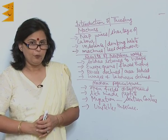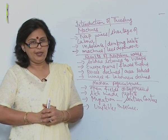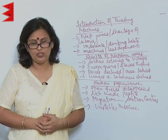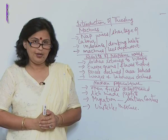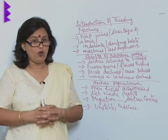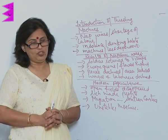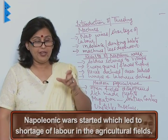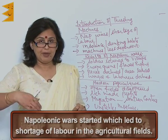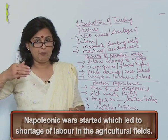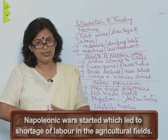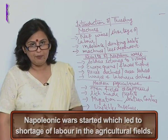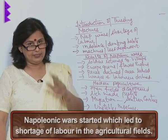Let me continue with the story of England at that time. There was an introduction of threshing machines in the English countryside. What were the reasons for the introduction of threshing machines? The Napoleonic war started, and this meant lots of people were required as soldiers in the battlefield, which led to a shortage of labour in the agricultural fields.